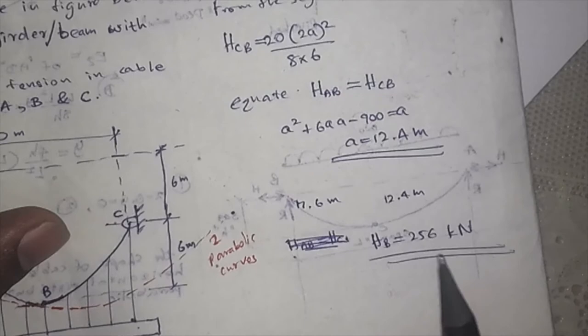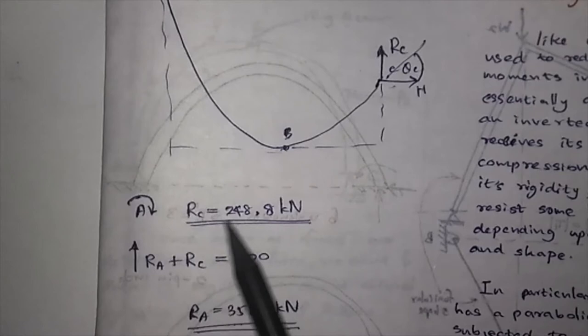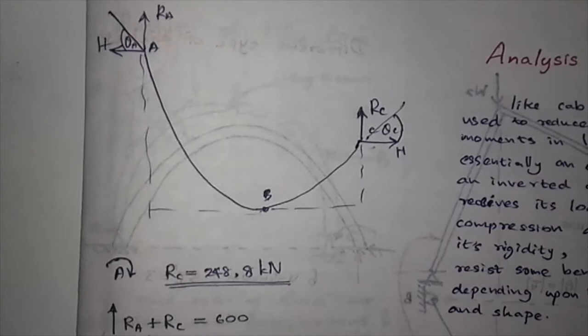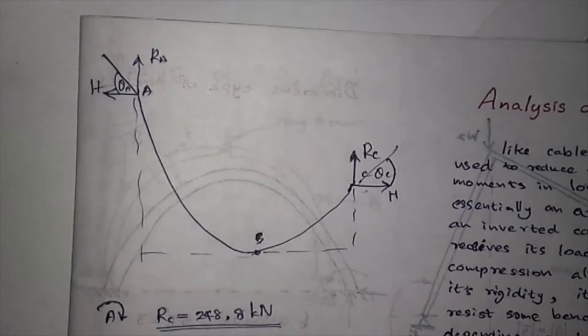This is the further part of that problem. Rc can be found by taking the moments around point A. This is actually Vc. By using vertical equilibrium at A, you can find Rc, which is 600 because the entire vertical downward load is 600. Using that you can find reaction at A.